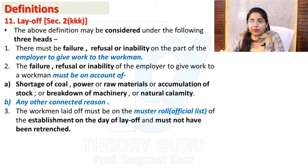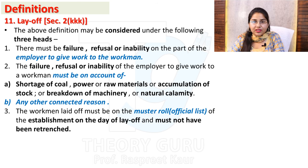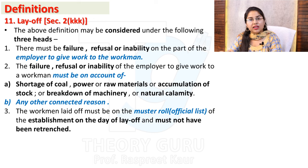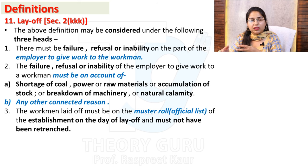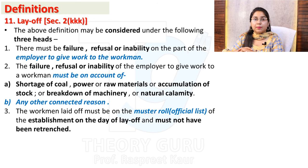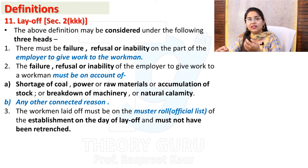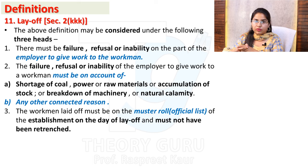The workmen laid off must be on the muster roll — whoever is to be laid off must have their name in the official list. And they must not have been retrenched. Retrenched means to be removed. So basically, Lay Off means that the worker is an employee of the factory or industry but the employer is not able to give any work due to shortage of coal, power, raw materials, or other reasons. We consider that to be a Lay Off.